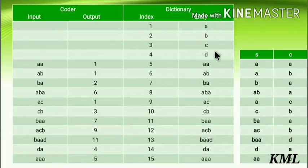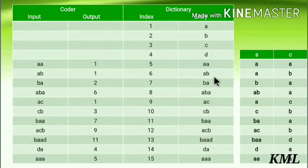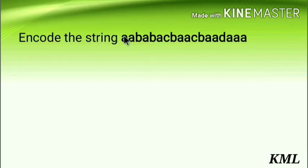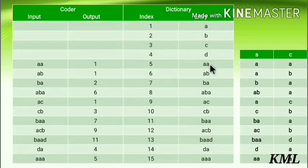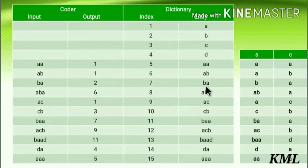Now S is 'a' and C is 'b'. Concatenate both and check if 'ab' is in the dictionary — we don't have 'ab' yet. Output the index for S, which is 'a' — index 1, so output 1. Increment the index and write 'ab' in the entry column. Increment both counters: now S is 'b' and C is 'a'. Check if 'ba' is in the dictionary — we don't have 'ba' yet. Output the index for S, which is 'b' — that is 2. Output 2, increment index, and write 'ba' in the entry column. Increment both counters.